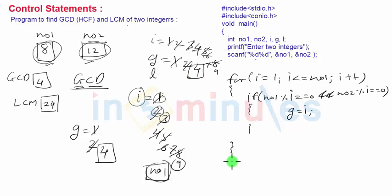That value will display after the loop. So we have displayed the value of GCD by using printf command. Then you have to find out LCM.